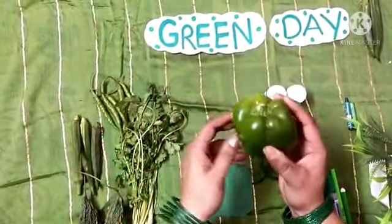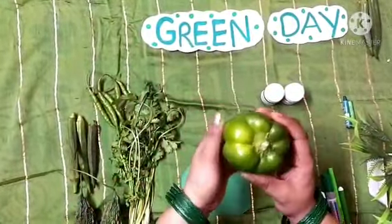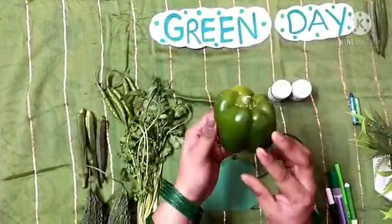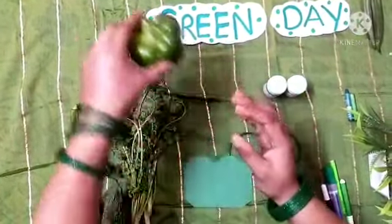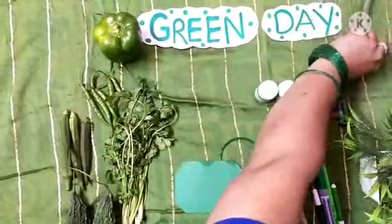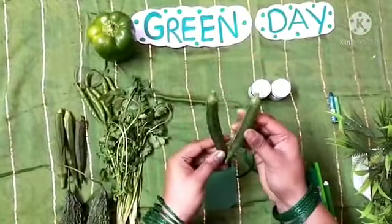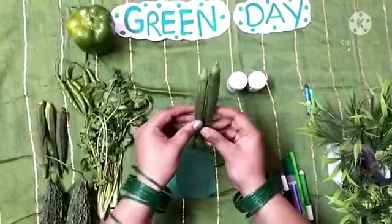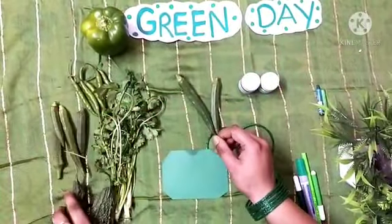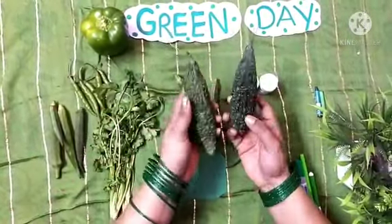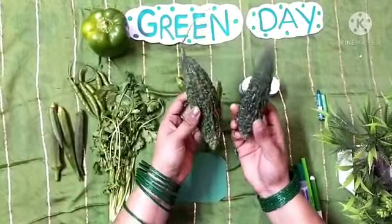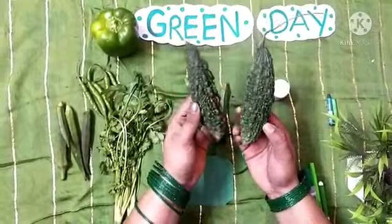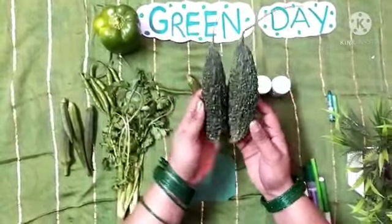What is this? This is capsicum. This is also green colour. What is the colour of capsicum? Green. Wow! I have lady finger. Wow, lady finger! The colour of lady finger is green. Yes, see, what is this? Anyone can tell me? This is bitter gourd. In Hindi we say karela. Yes, bitter gourd. This is bitter gourd.